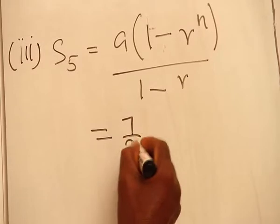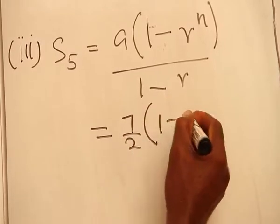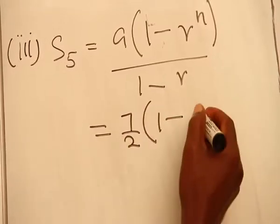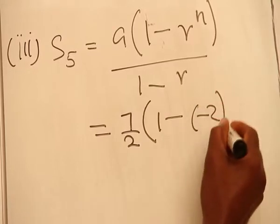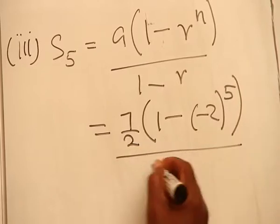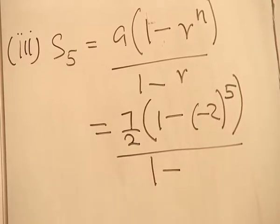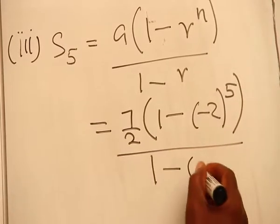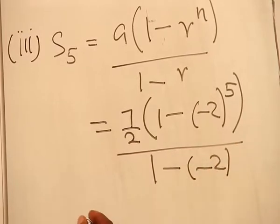is 7 over 2, times 1 minus our R, which is minus 2, minus 2 raised to the power of 5, which is the value for N, everything all over 1 minus our R, which is again minus 2. Going further,